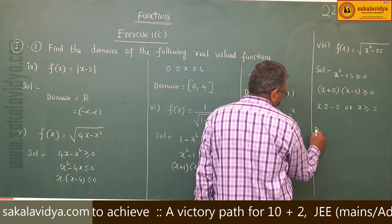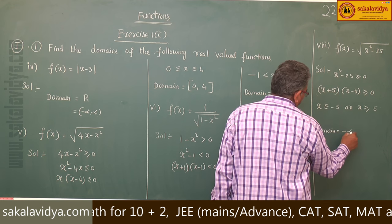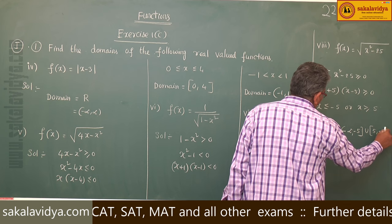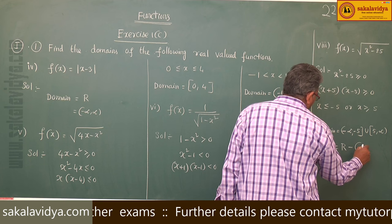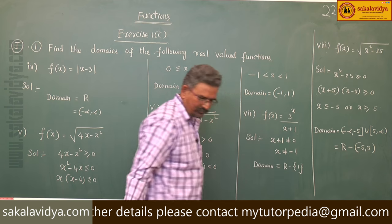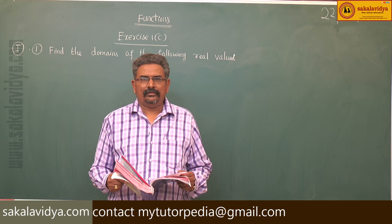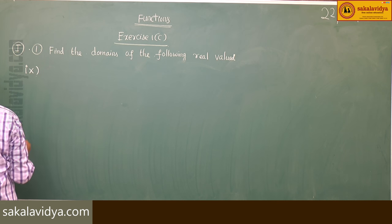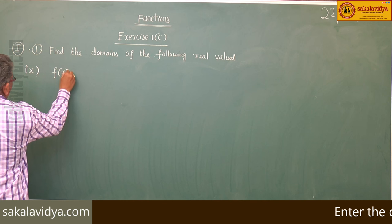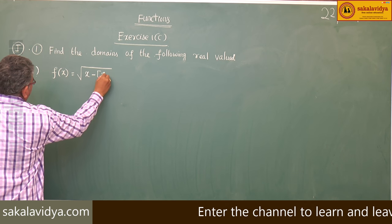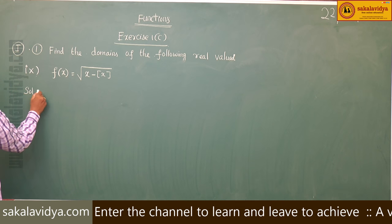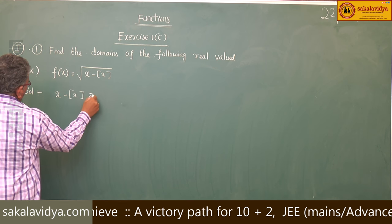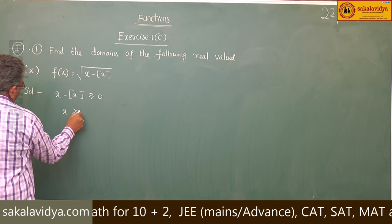So domain is equal to (−∞, −5] union [5, ∞), which is equal to ℝ minus the open interval (−5, 5). Ninth problem: f of x is equal to root of x minus bracket x, where bracket x denotes the greatest integer function. Here x minus [x] must be greater than or equal to 0, that is x must be greater than or equal to [x].